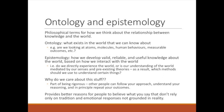For example, do we directly experience the world or is our understanding mediated by our senses and pre-existing theories? Which methods should we use to understand different things? Part of being rigorous is having an awareness of ontology and epistemology, and allowing other people to follow your research approach, understand your reasoning, and in principle repeat your outcomes or at least your process — providing better reasons for people to believe what you say.